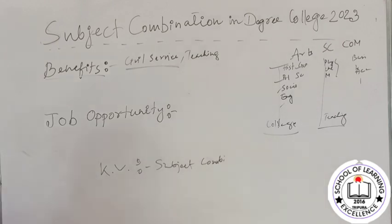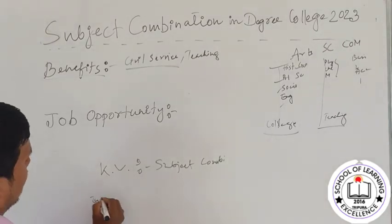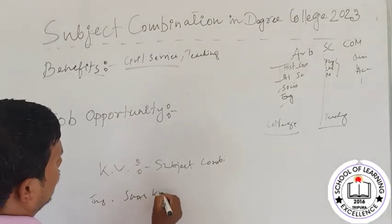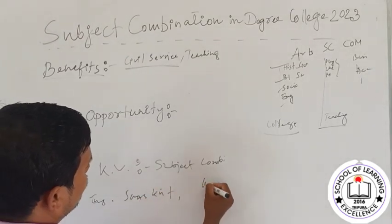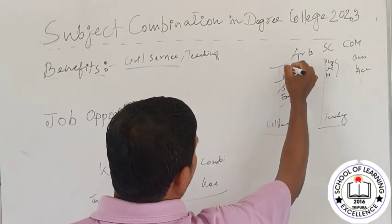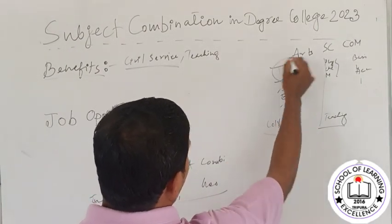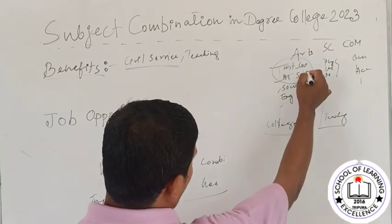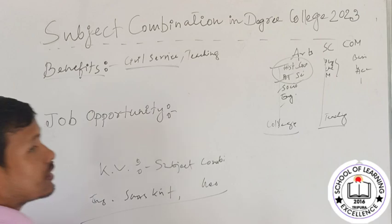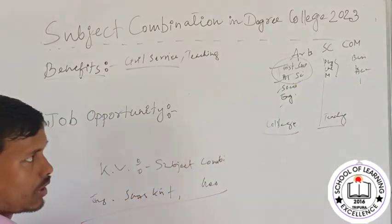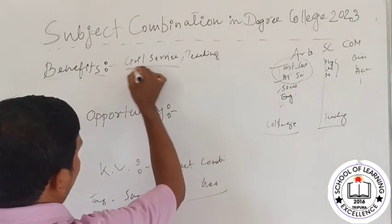The subject combination includes History, Geography, and all Science subjects — not just English. If you want to learn Economics, you can learn Economics. In KB, the subject combination is very important. If you have concerns about civil service, the subject combination in KB matters greatly.